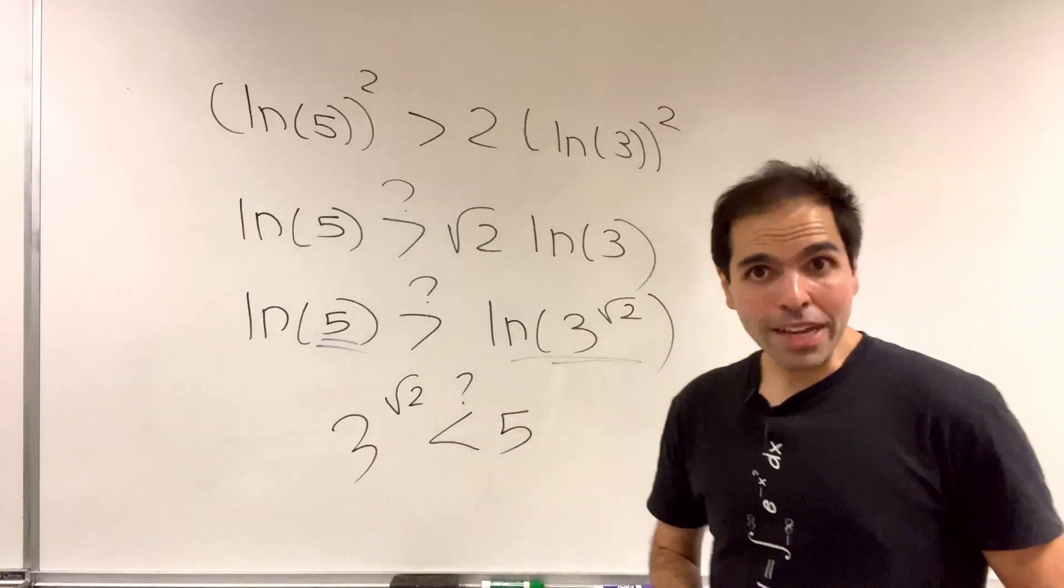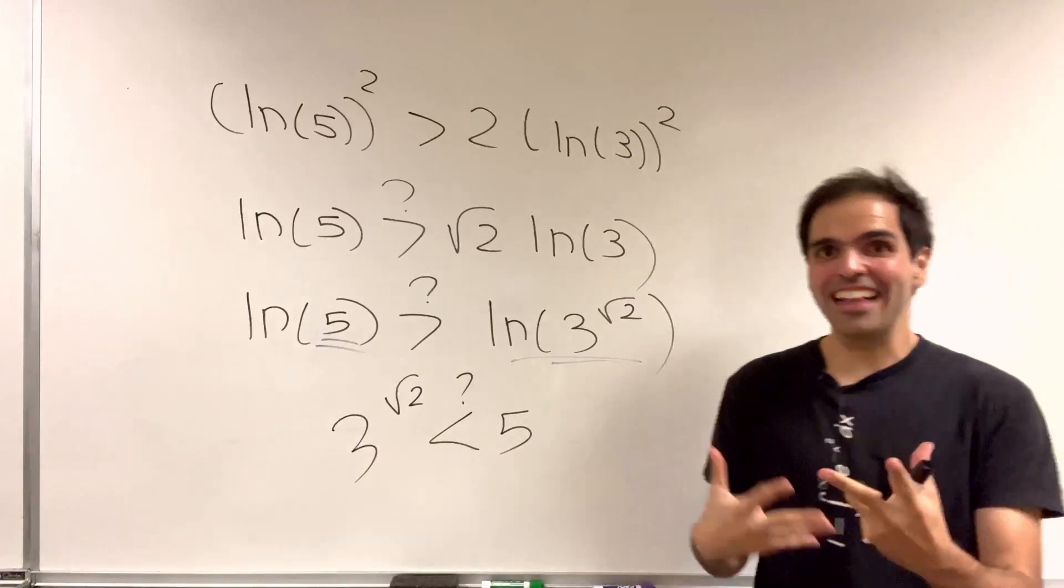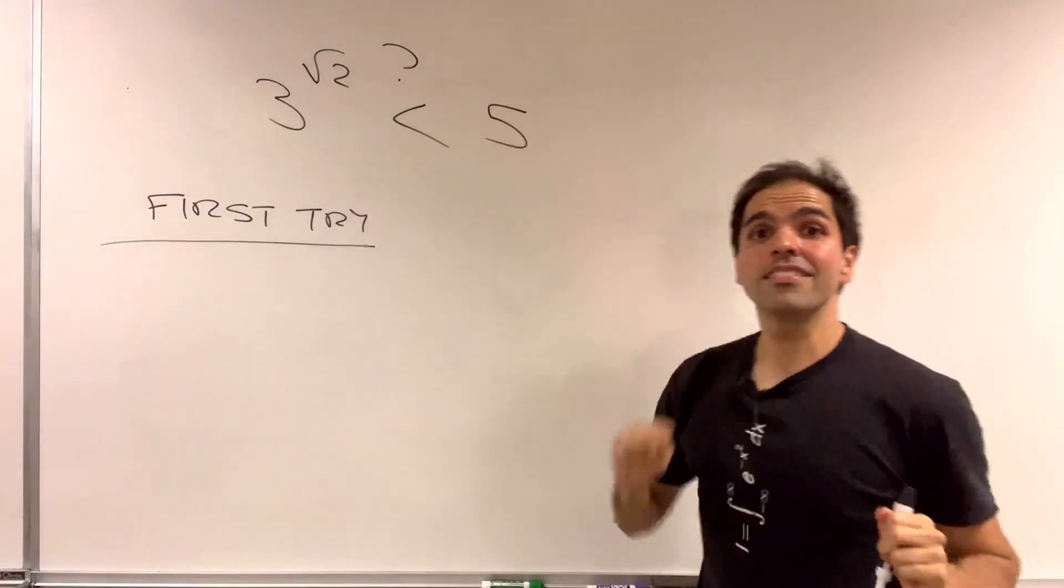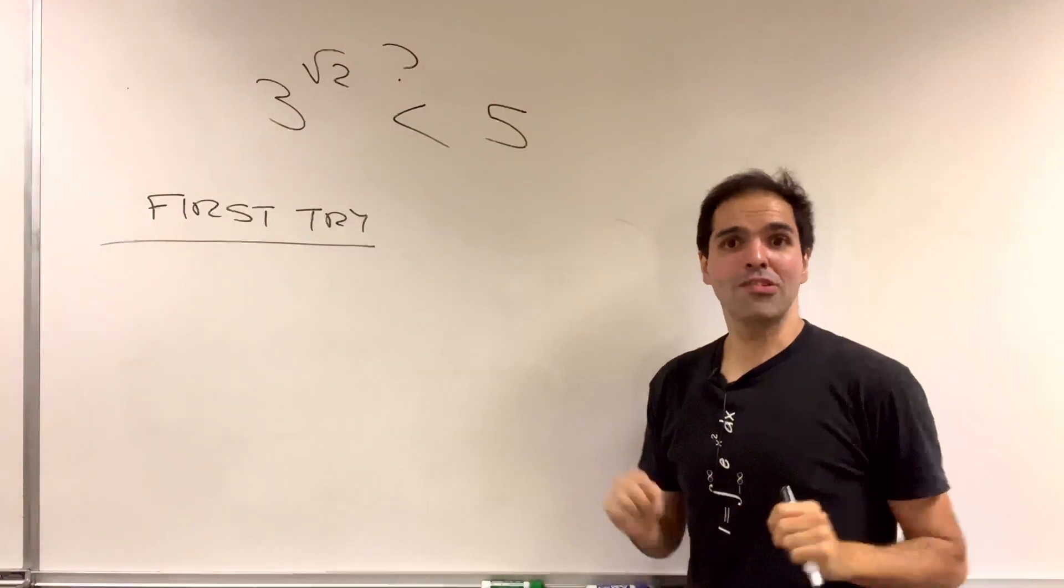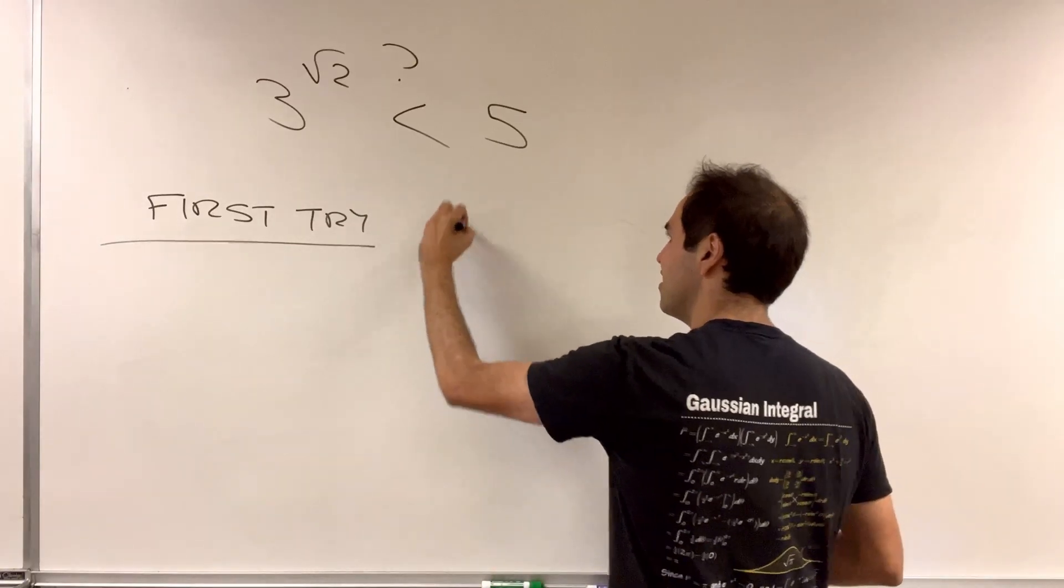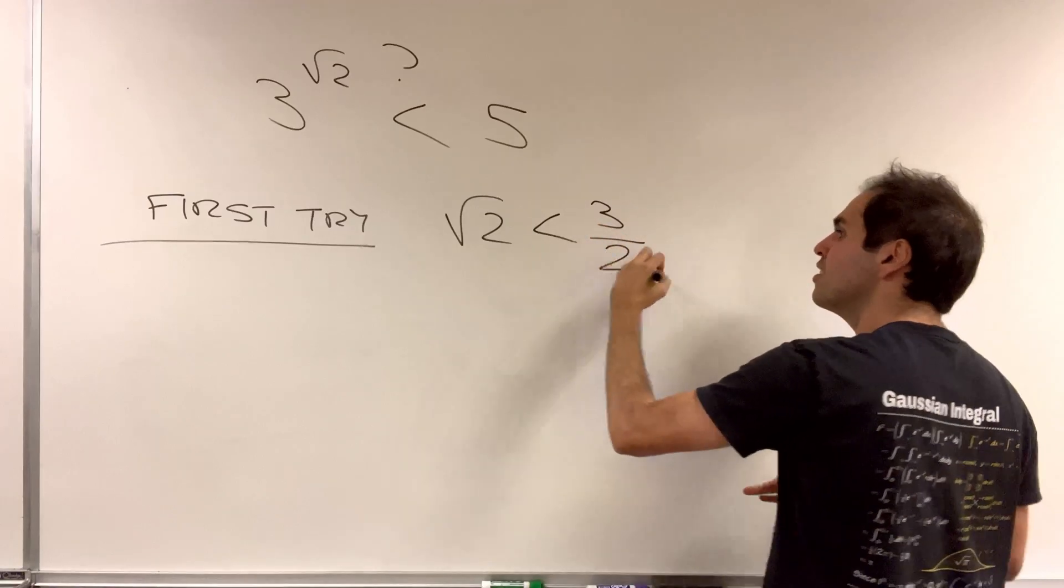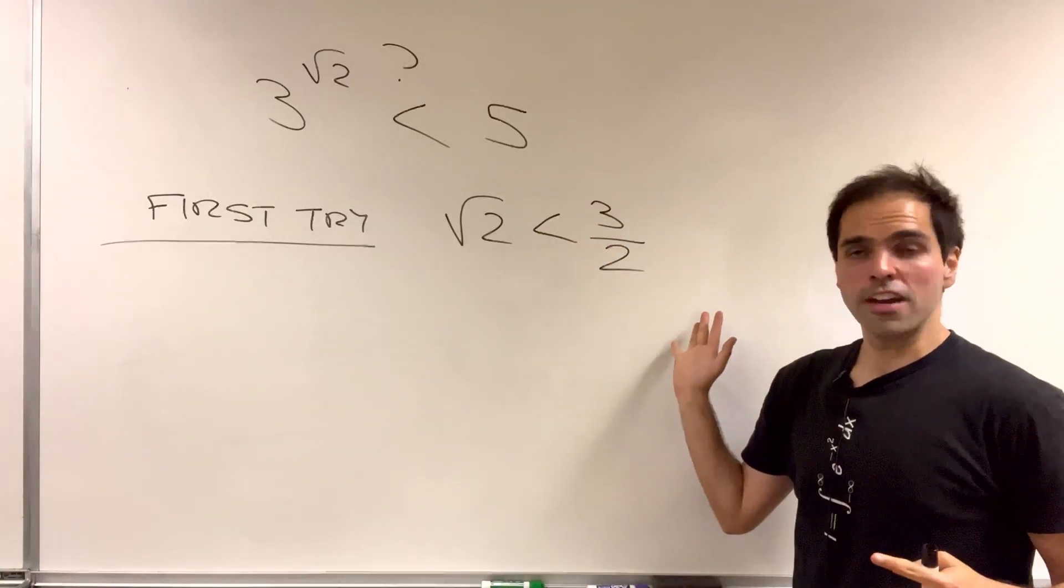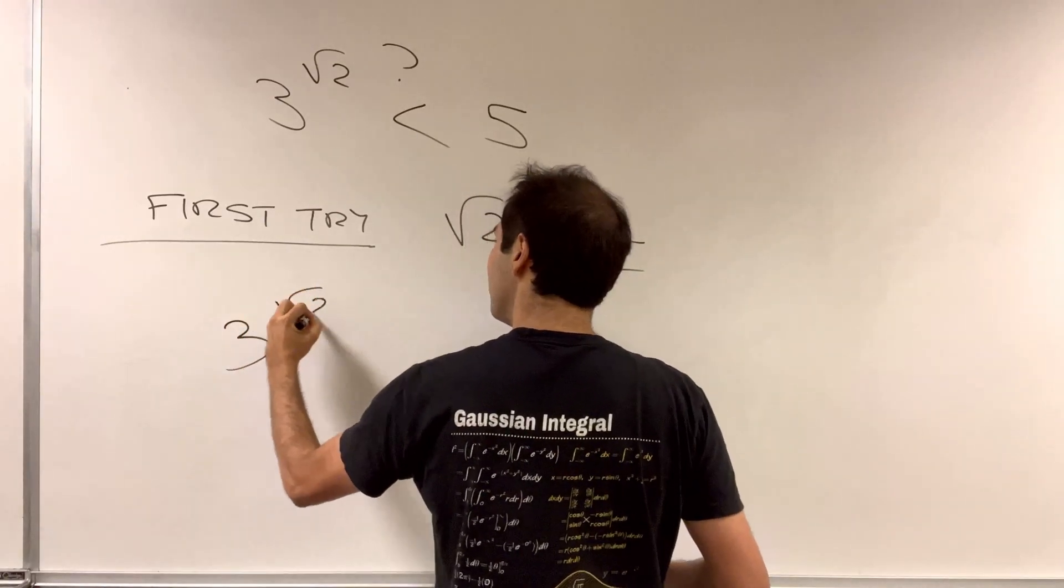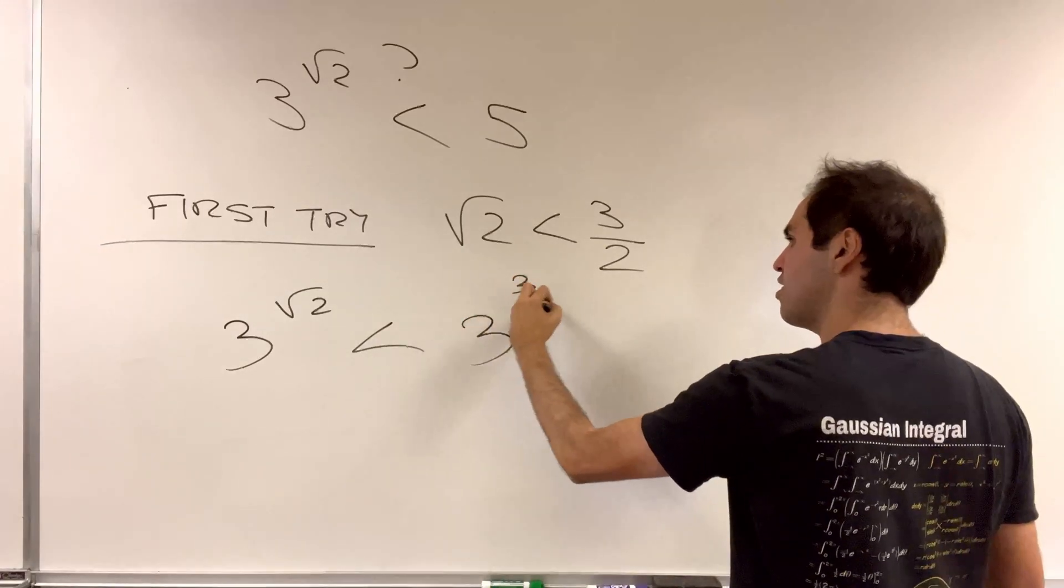And what I'm going to present to you now is what I like to call the analysis way or the applied math way. Because square root of 2 is a very weird number. Let's replace it by a fraction. So square root of 2, it is true that it's less than 3 halves, just by squaring both sides. And so in particular, 3 to the square root of 2 is less than 3 to the 3 halves.